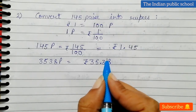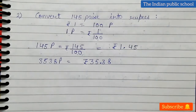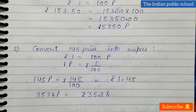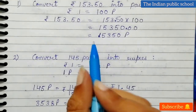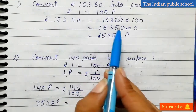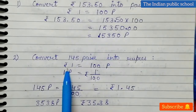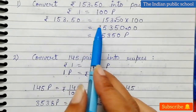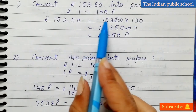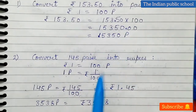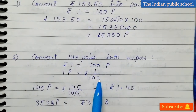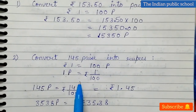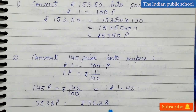So this is all about the conversion of money. Two things: if you want to convert rupees to paisa, multiply by 100; if you want to convert paisa to rupees, divide by 100. When multiplying by 100, shift the decimal 2 digits forward; when dividing by 100, shift the decimal 2 digits backward. We will come soon with the next video. Till then, thank you, have a nice day.